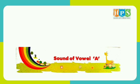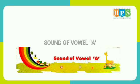How many vowel sounds are there in English? Five. Which are they? Vowels: A, E, I, O, U. And today we will learn the sound of vowel A. Let's begin our class.